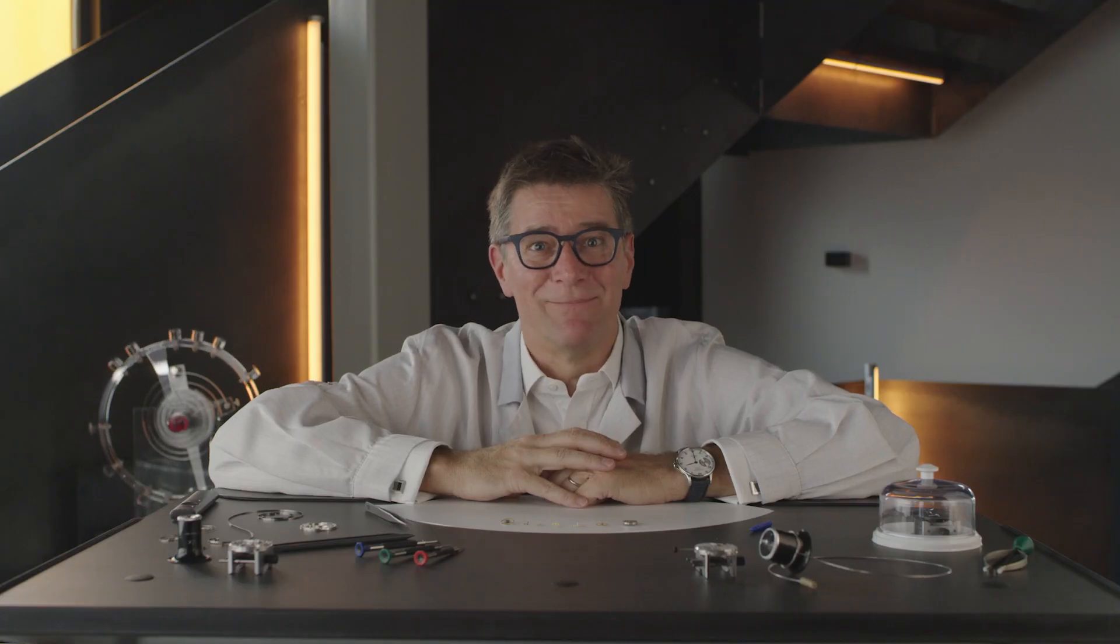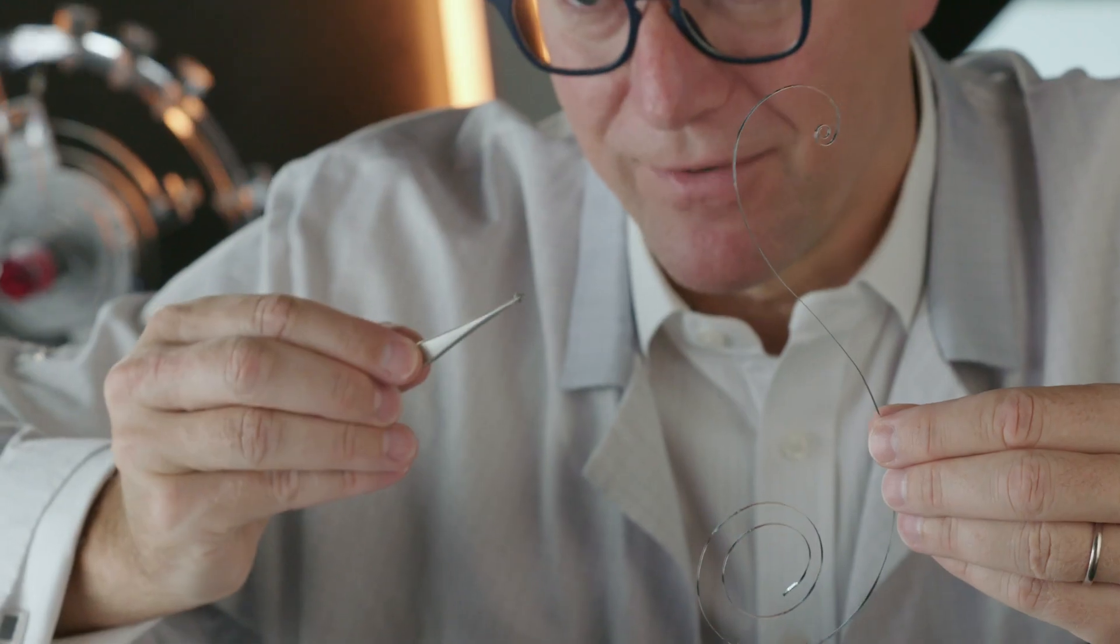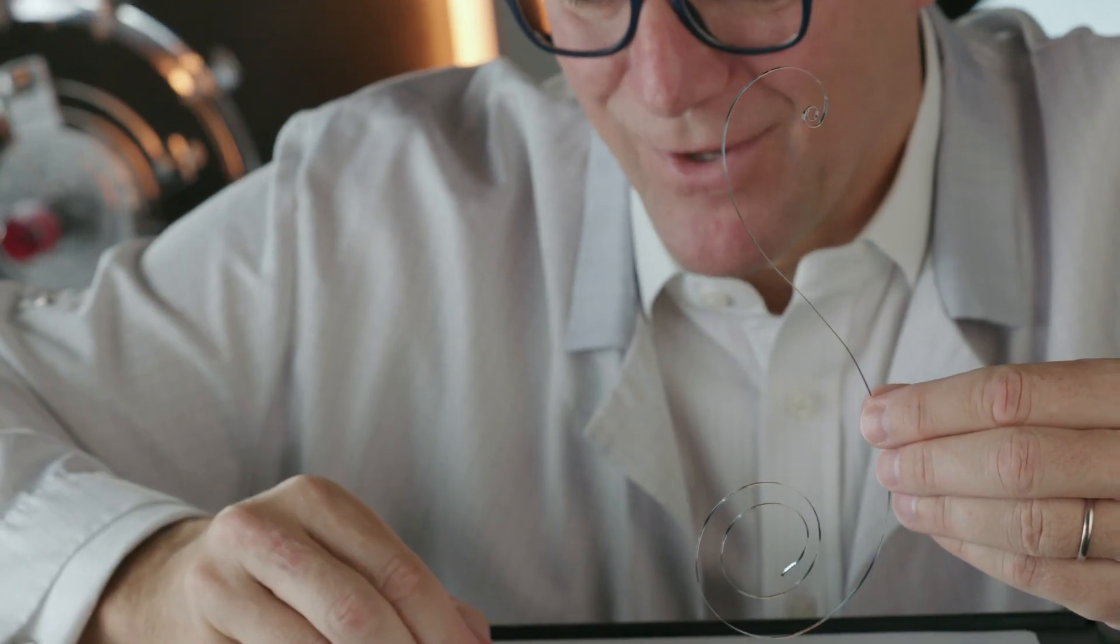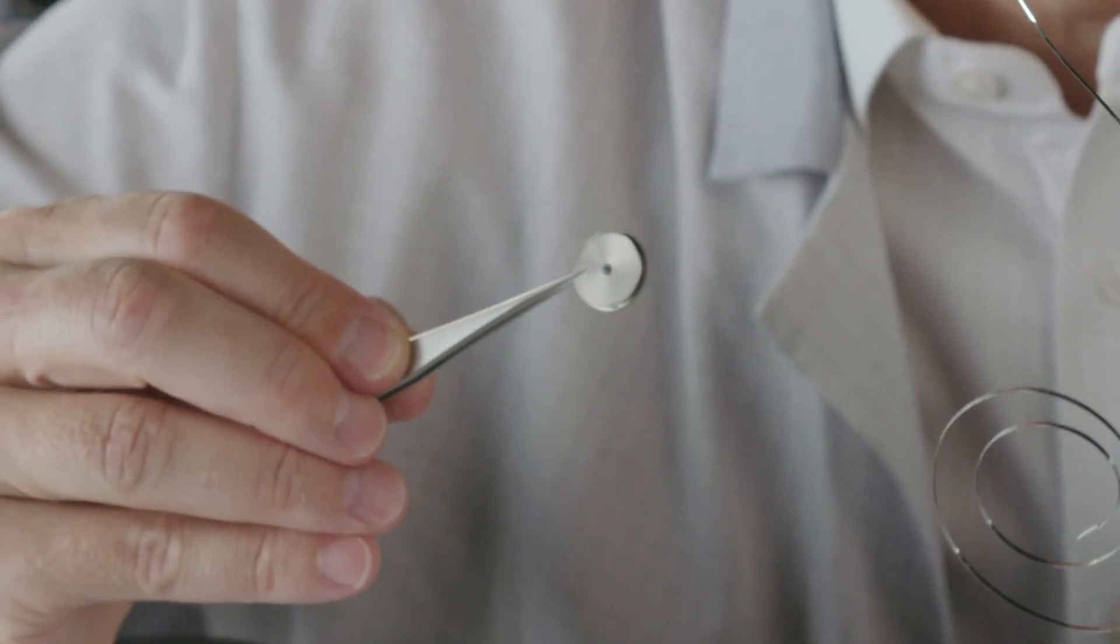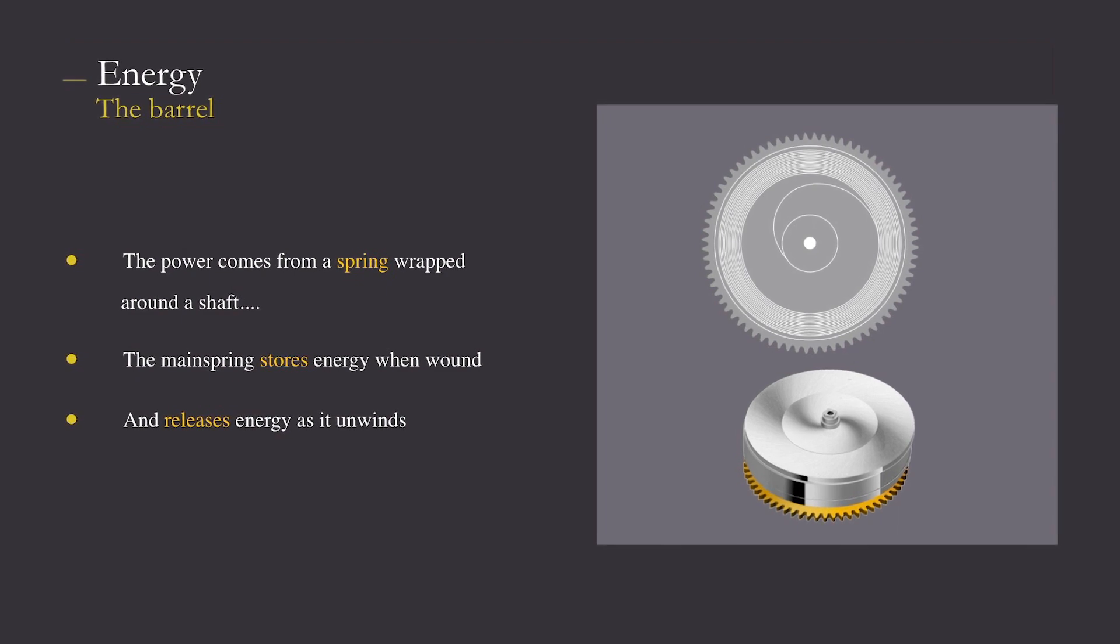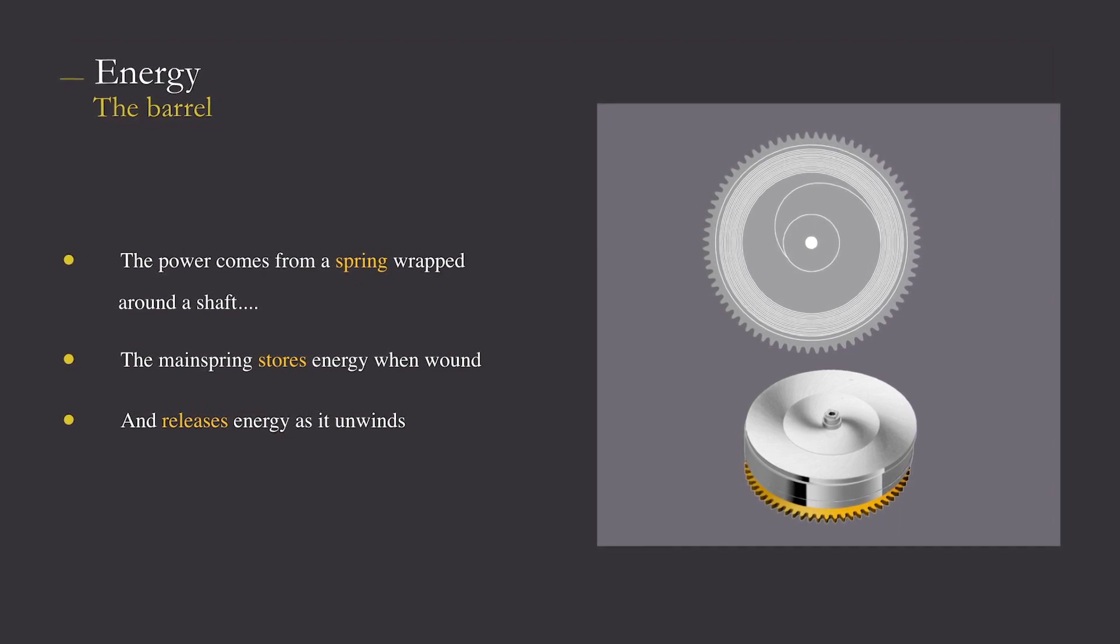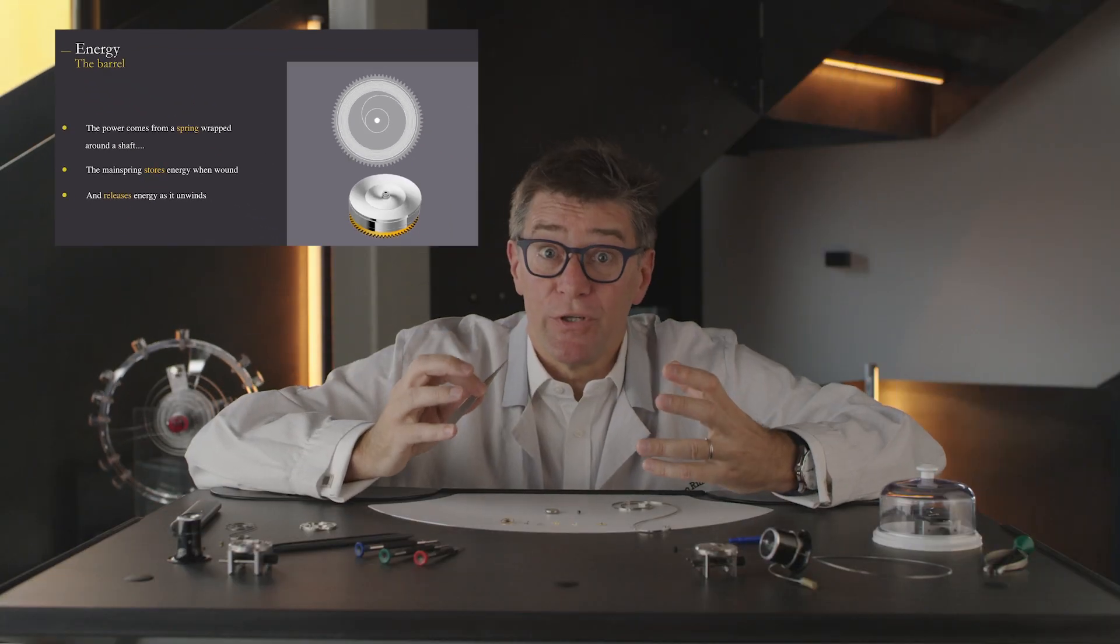I would like to show you where power comes from and how it's created. This strip of metal is coiled around this arbor here and will be put in this barrel inside. By coiling up, the spring will create a tension which will be an important energy for us, as the spring wants to unwind to return to its original shape.